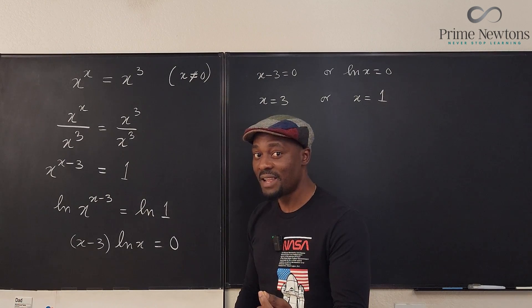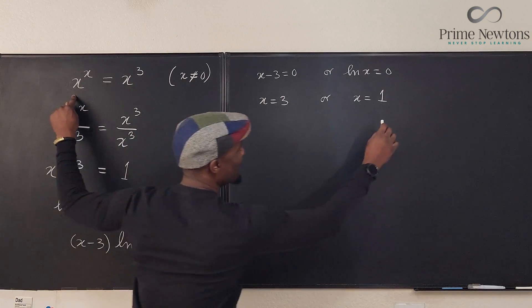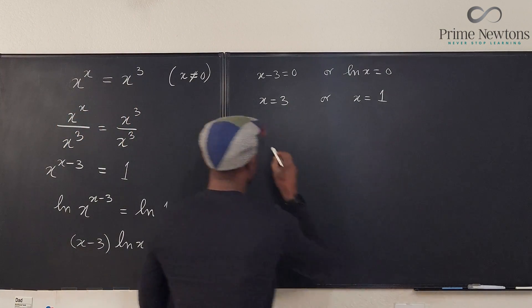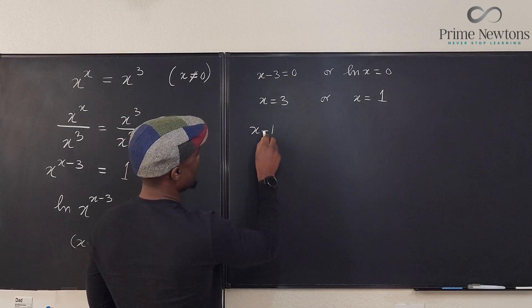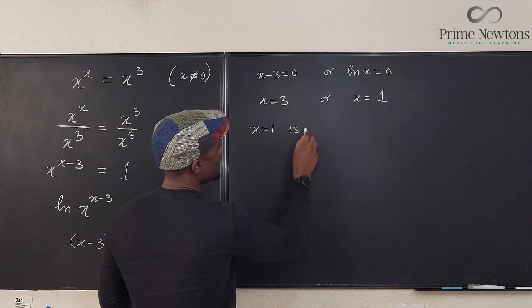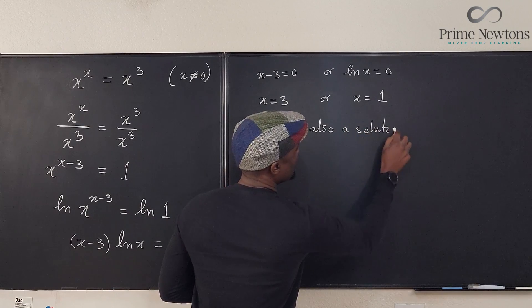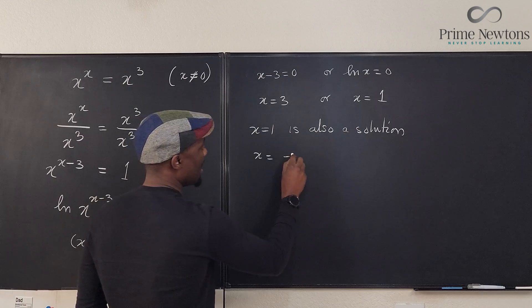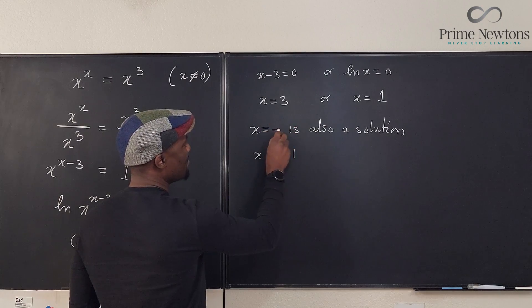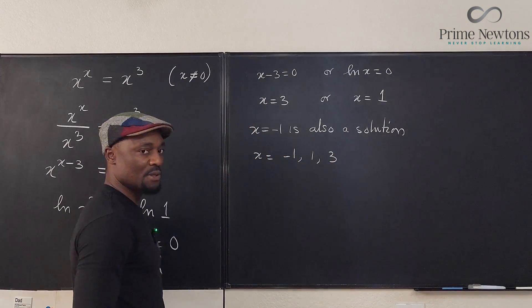And if you try minus 1 here, so third answer, let's say x minus 1, sorry, x equals 1 is also a solution. Okay, so we can say x is equal to minus 1. Sorry, come on, I said minus 1. Minus 1, 1, and 3, these are the solutions.